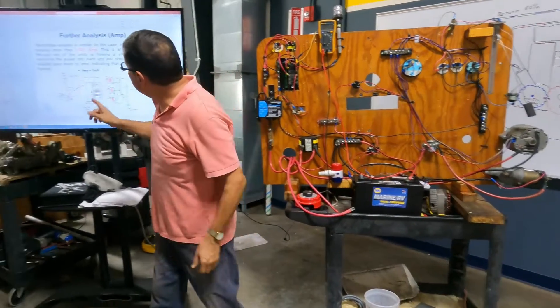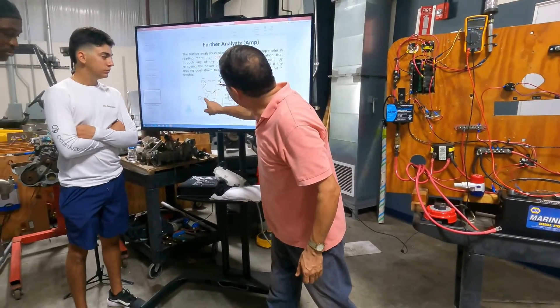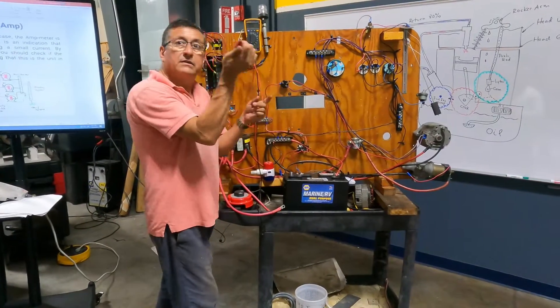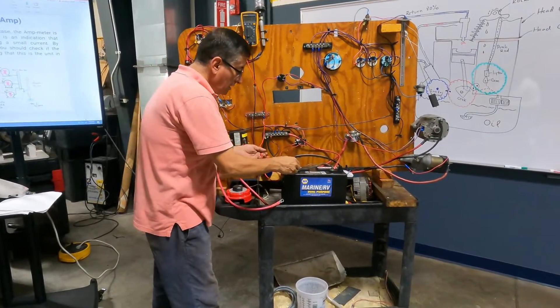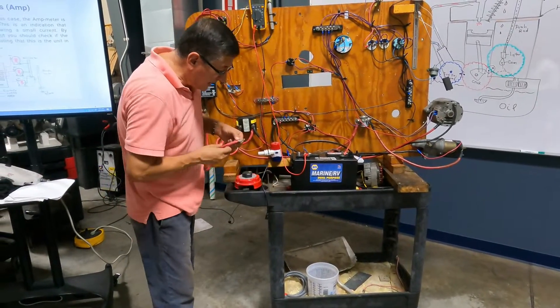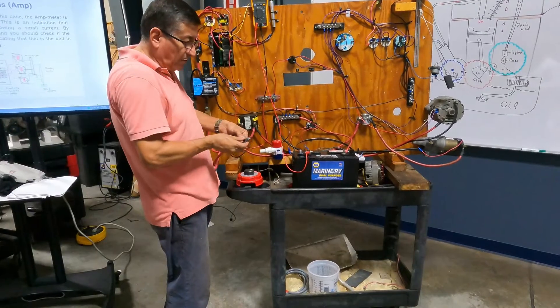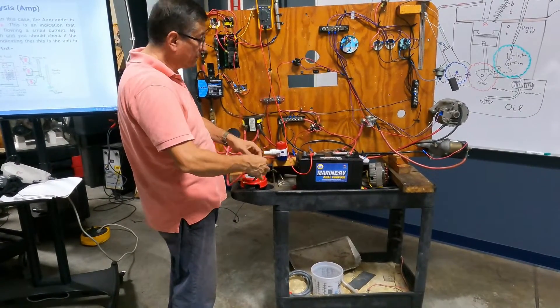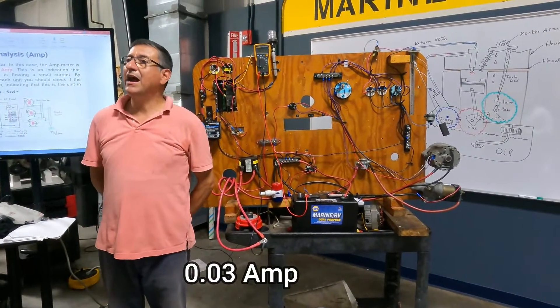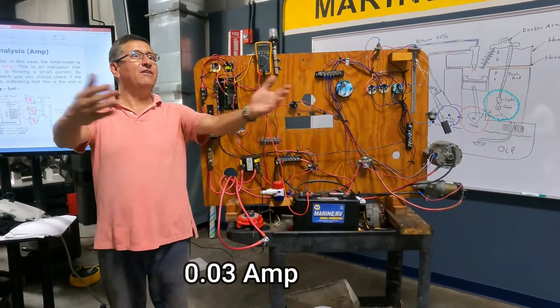And I am going to connect the red of the multimeter in the positive of the battery. The red on the positive and the black with the positive cable that I disconnect. And I have 0.03 amps with everything off.